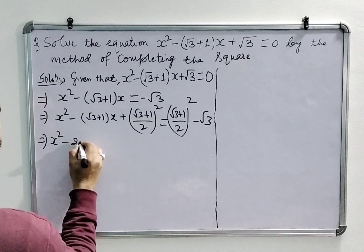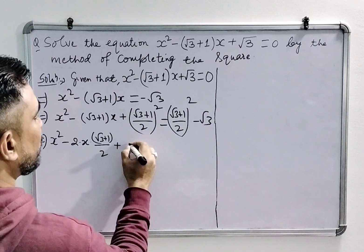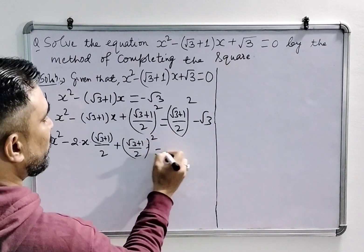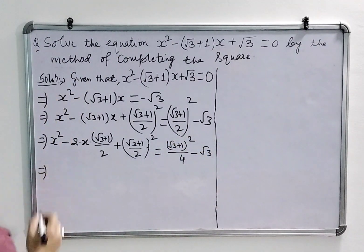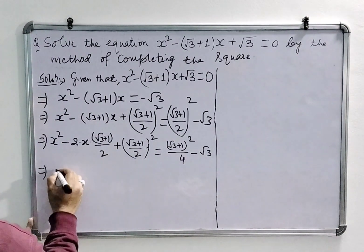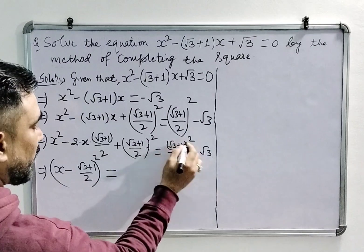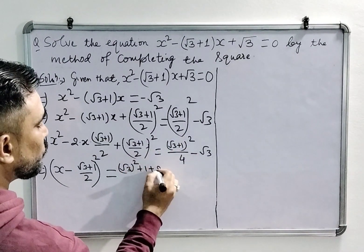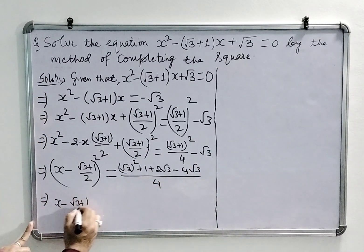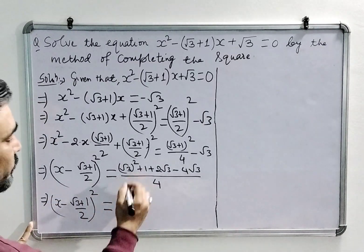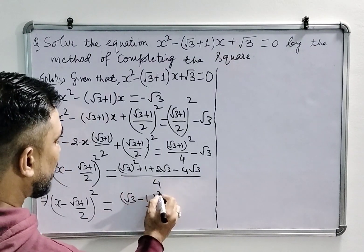Now look here, we can write this as 2 into x · (√3 + 1)/2. Now this is in the form of (A − B) whole square. So we can write x minus (√3 + 1)/2, whole square, equal to A² + B² + 2AB minus 4√3/4. This can be written as x minus (√3 + 1)/2, whole square, equals — now this is minus 2√3 — so this can be written as (√3 − 1)² upon 4.